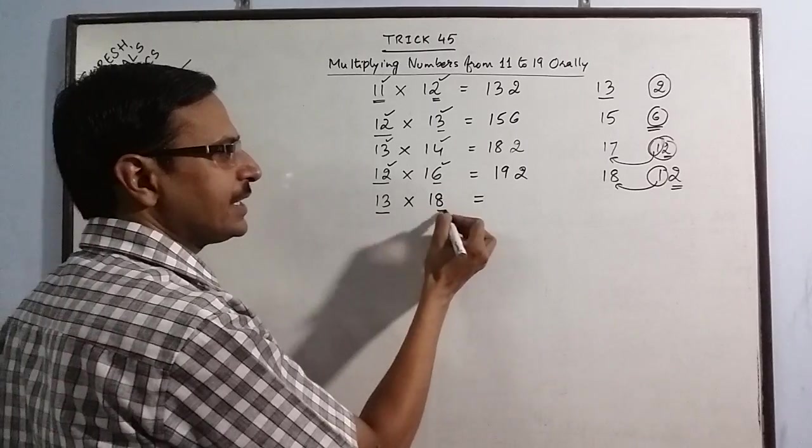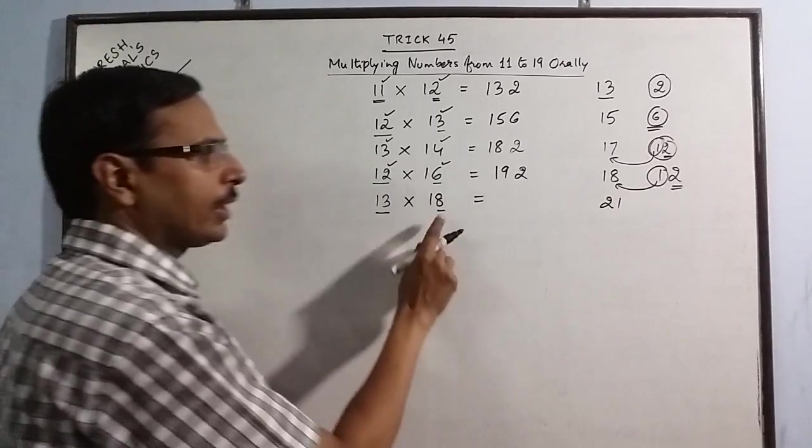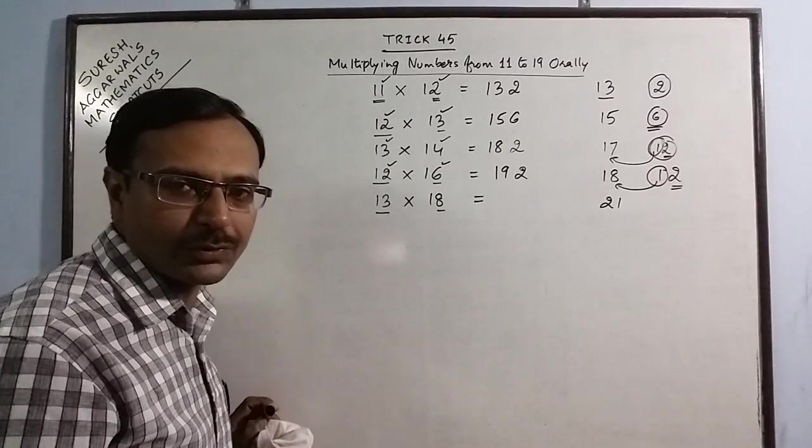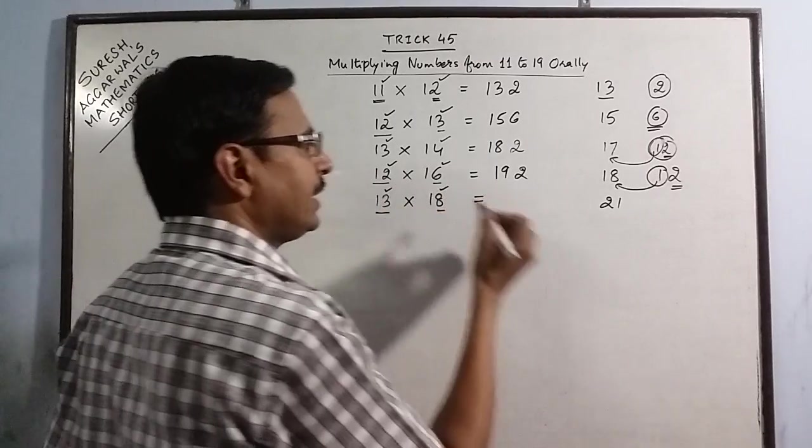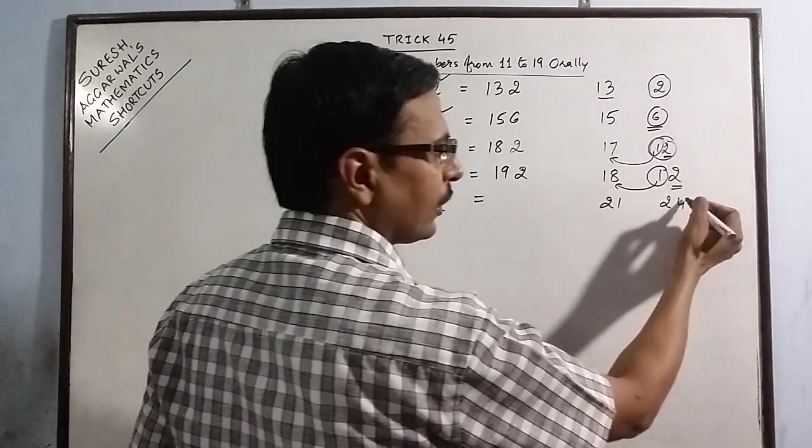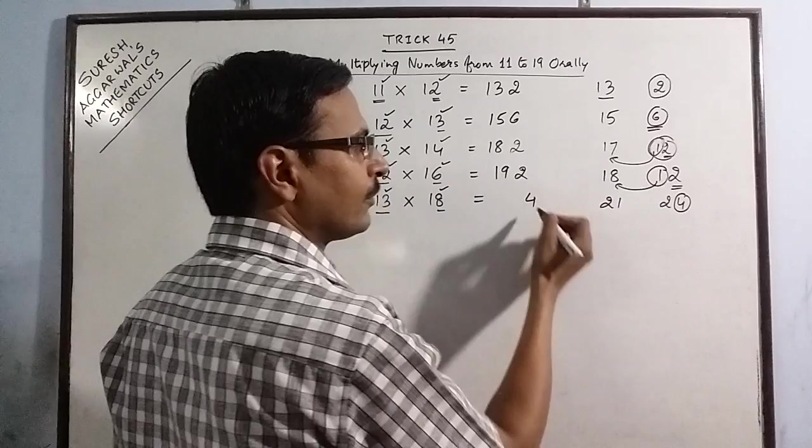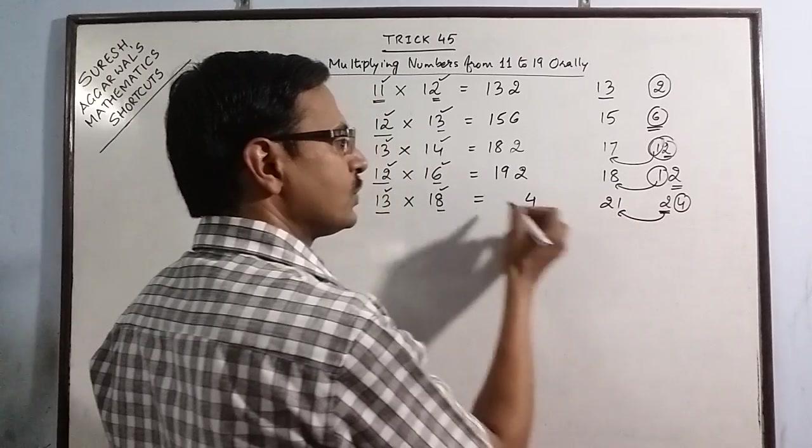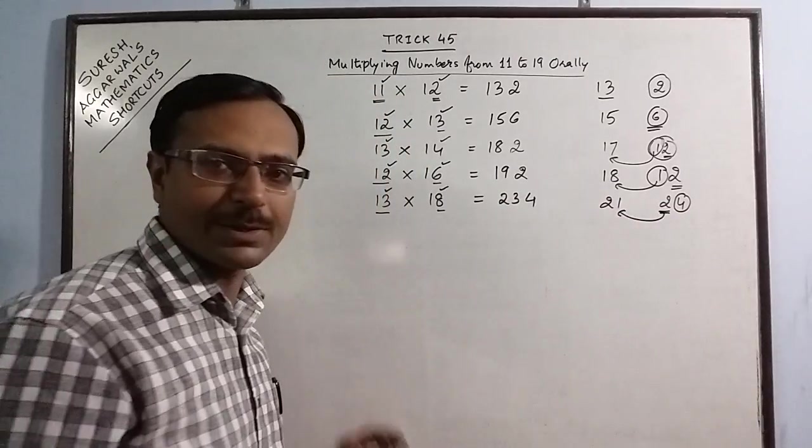You can have 13 plus 8 as 21 or 18 plus 3 as 21. Both ways it is 21. Now 3 and 8, 3 into 8 is 24. Now retain this number 4 and this 2 is to be added here. 21 plus 2 is 23. So 234 is the product.